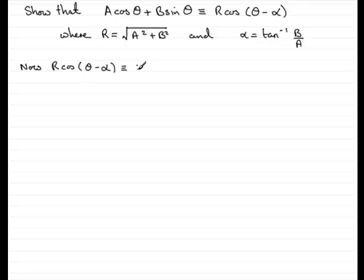So, this is identical to R being multiplied by the expansion of cos(θ - α). Now, don't fall into the trap that this is cosine θ minus cosine α. This is not a number but a function. So, it's got its own identity, one that you should already know.